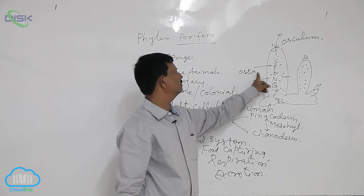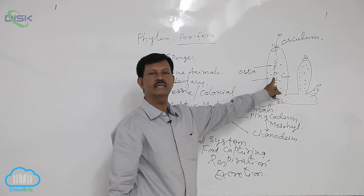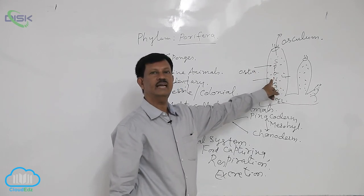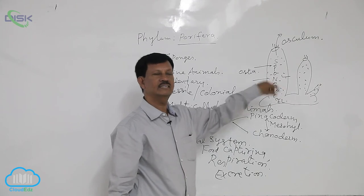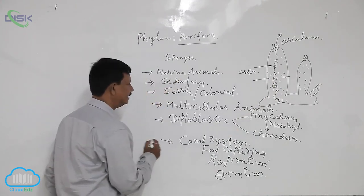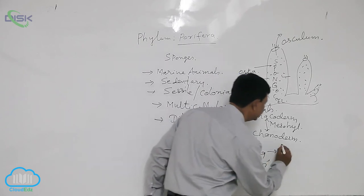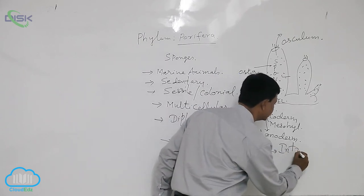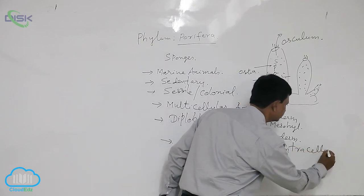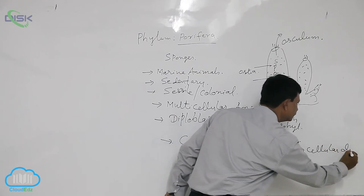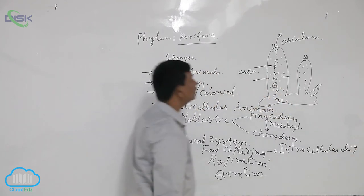Through the water, various food particles enter the body. They capture the food and digestion takes place inside the cell. This is known as intracellular digestion. Within the cell, this is also a primitive character.